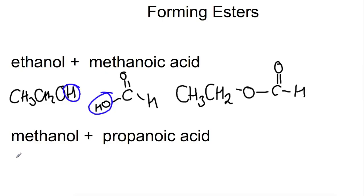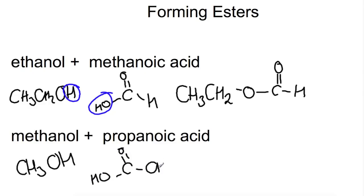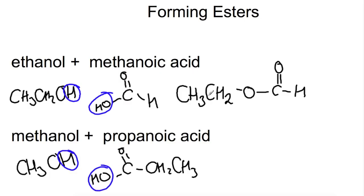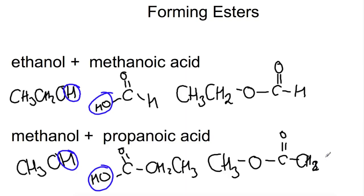In the second example, methanol and propanoic acid form methyl propanoate. Methanol gives CH3, OH. For propanoic acid, I'll face the functional group towards the alcohol — that gives three carbons. We lose the H from the alcohol and the OH from the carboxylic acid to form water, joining the remaining parts: CH3 with the oxygen attaching to the C=O of the carboxylic acid, then the rest of the chain — methyl propanoate.